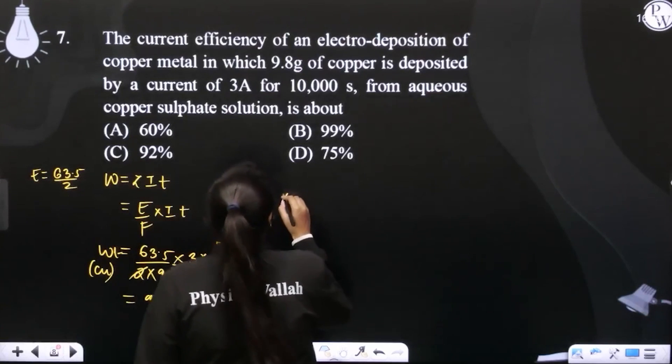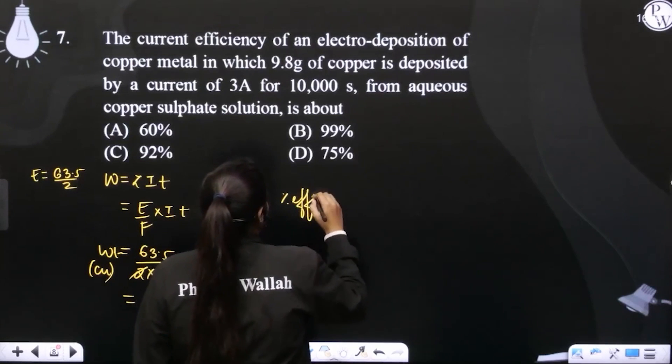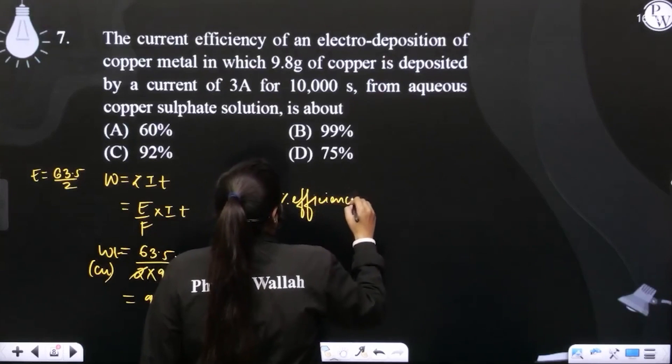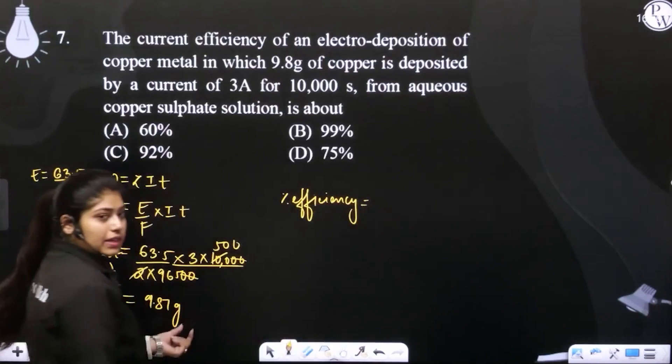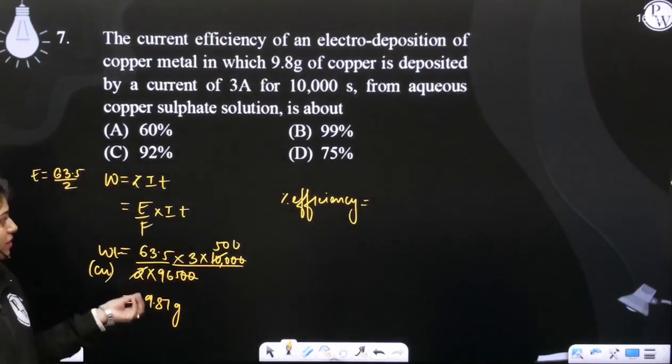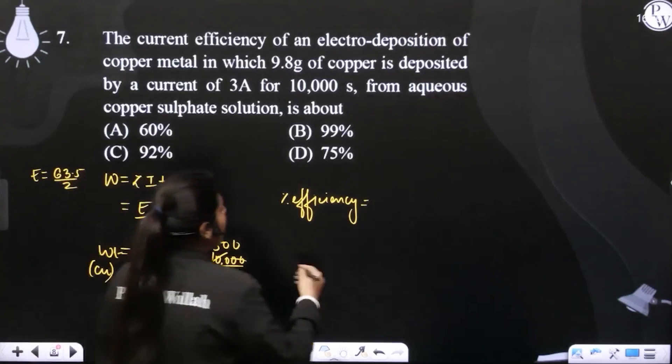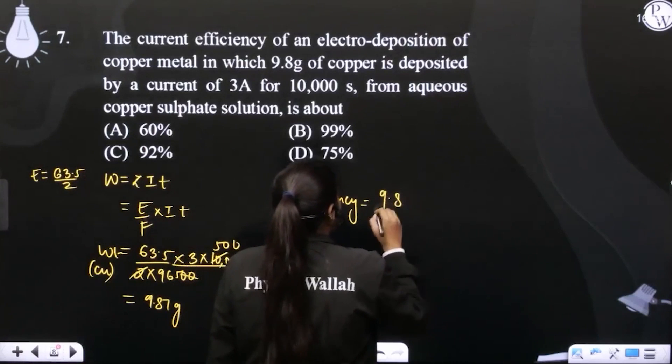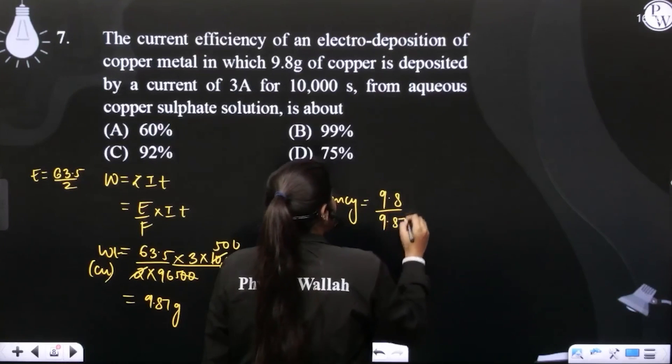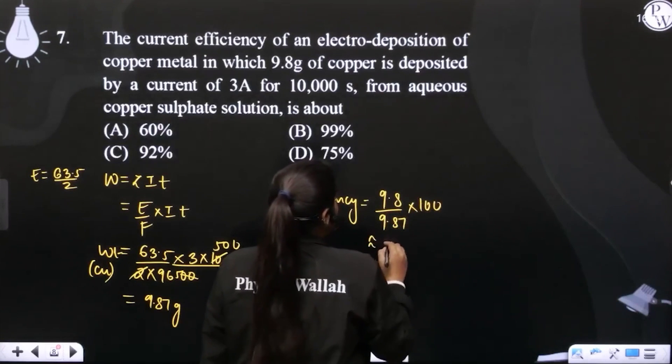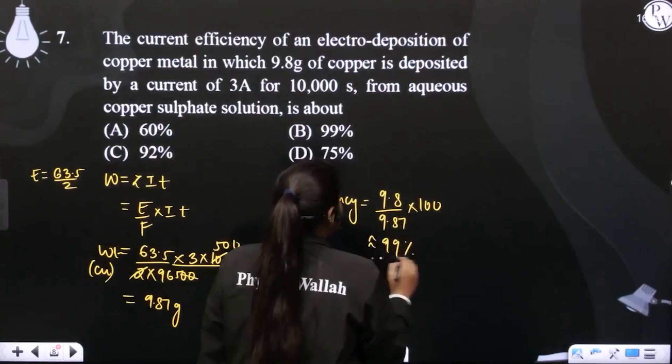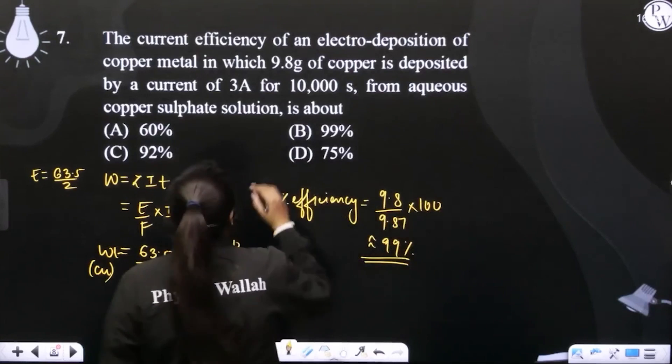Approximately 9.87 grams. Now efficiency, this is just like our marks, how much you should get versus how much you actually got. 9.8 divided by 9.87 multiplied by 100, so approximately what will happen? 99% efficiency, option number B.